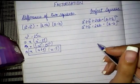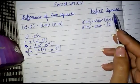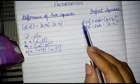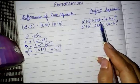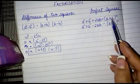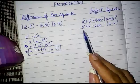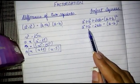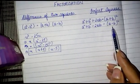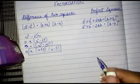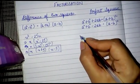Now looking at the second method, which is in the form of a perfect square. A perfect square means if the equation is in the form of a² + b² + 2ab, it can be factorized as (a + b)². In the same way, if it is in the form of a² + b² minus 2ab, it can be written as (a - b)².